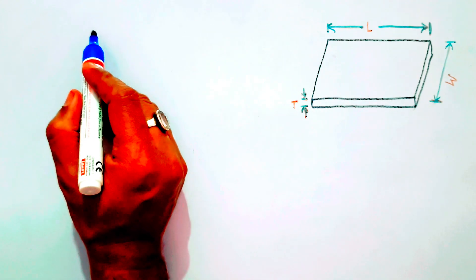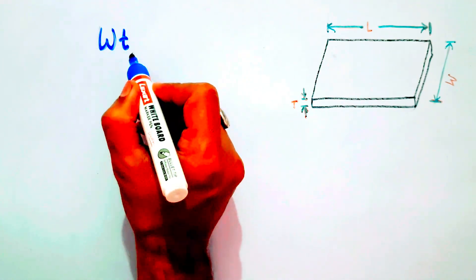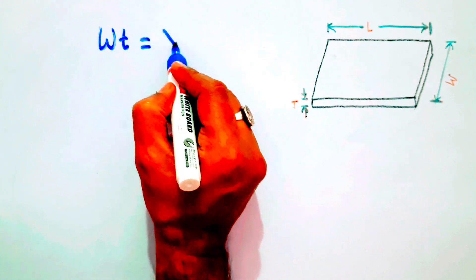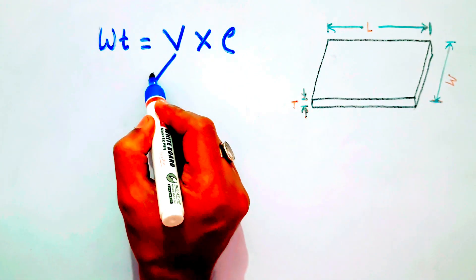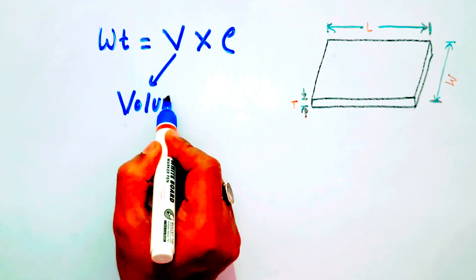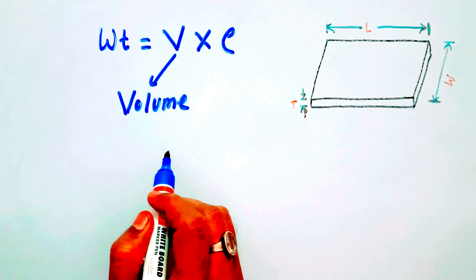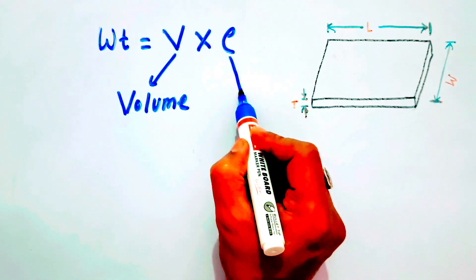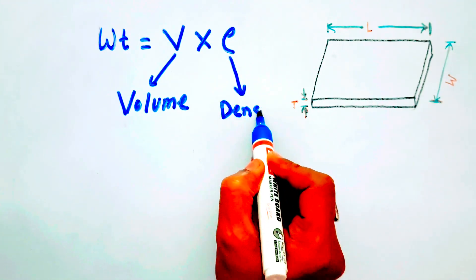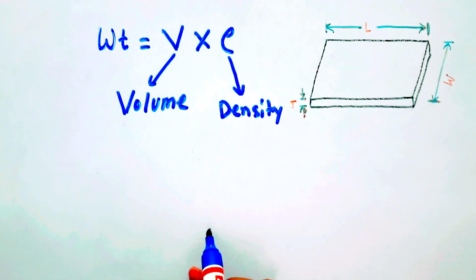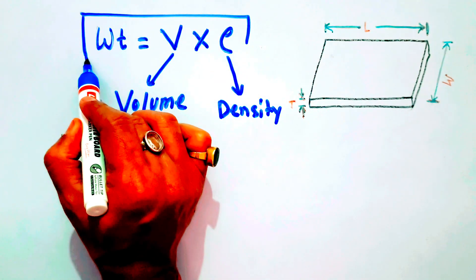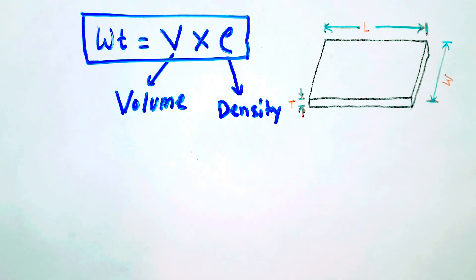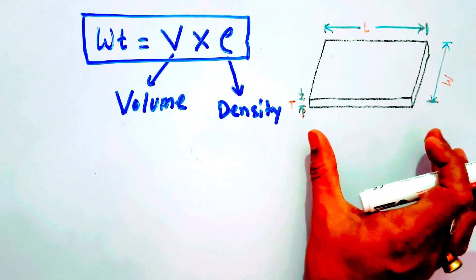The basic formula for calculating the weight is: weight is equal to V into rho. V is the volume of the material for which we have to calculate the weight, and rho is the density of that material. This is the basic formula for calculating the weight.